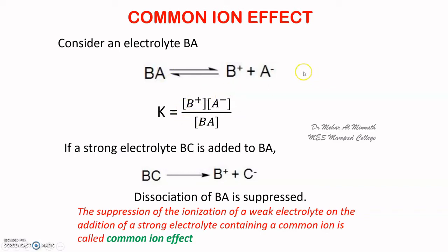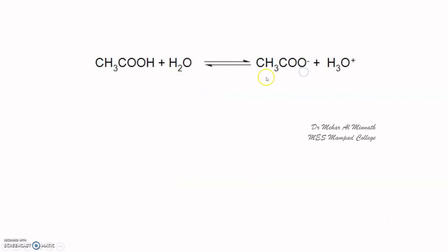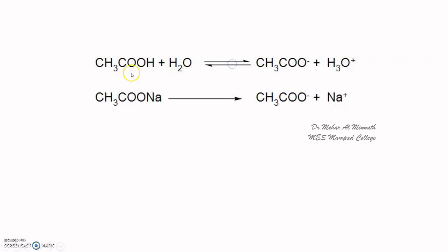Now let us take a few examples. Take acetic acid — it ionizes to acetate ion and H₃O⁺ in water. Acetic acid is a weak electrolyte and will ionize only partially. When you add a strong electrolyte sodium acetate to it, sodium acetate completely ionizes to acetate ion and Na⁺. So in order to maintain the equilibrium constant, the ionization of acetic acid is suppressed.